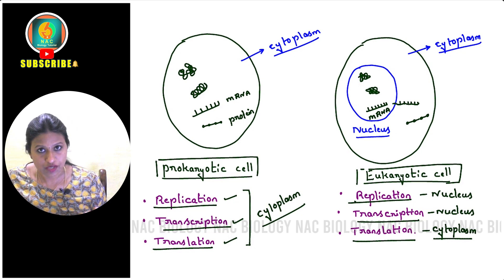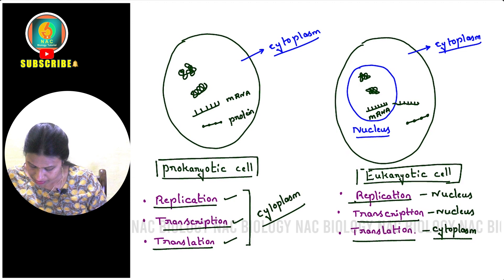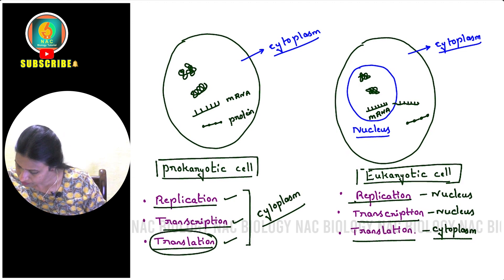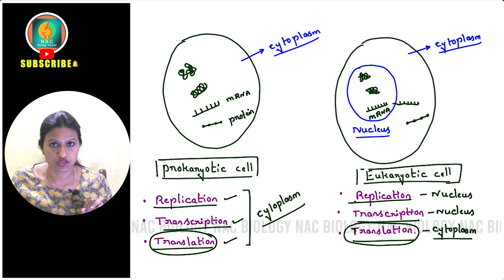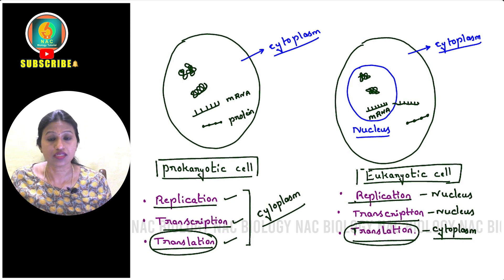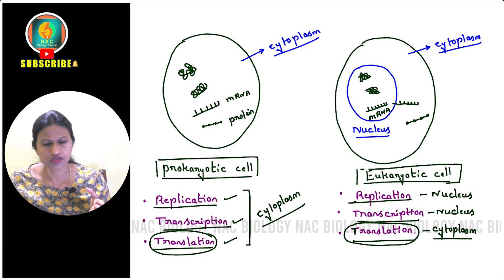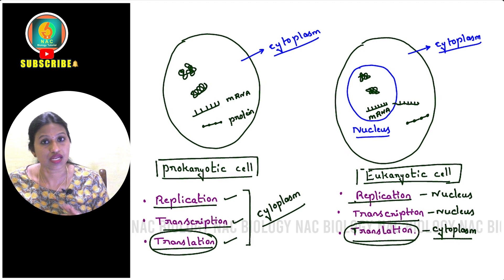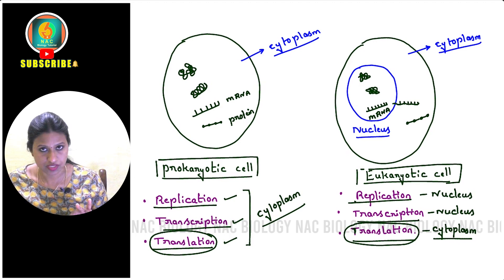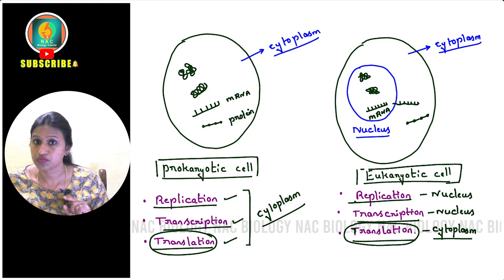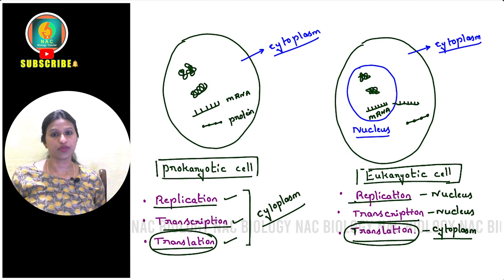So the common process that occurs in the cytoplasm in both prokaryotes and eukaryotes is translation. You may get a question: 'Name a common process of the central dogma of molecular biology which occurs in the cytoplasm in both prokaryotes and eukaryotes.' The answer is translation. Apart from translation, replication and transcription occur in the nucleus in eukaryotes, whereas in prokaryotes they occur in the cytoplasm.